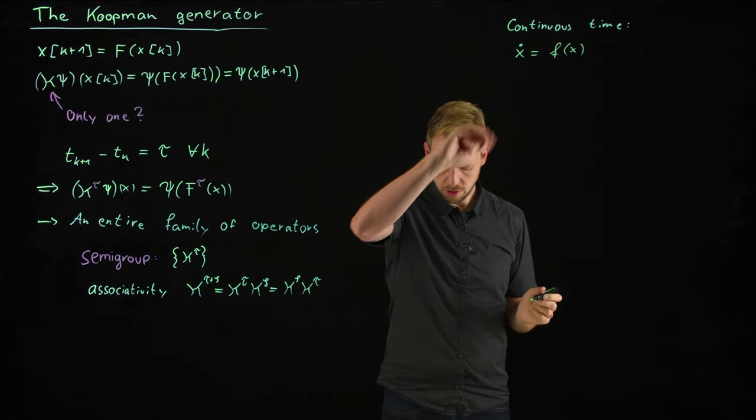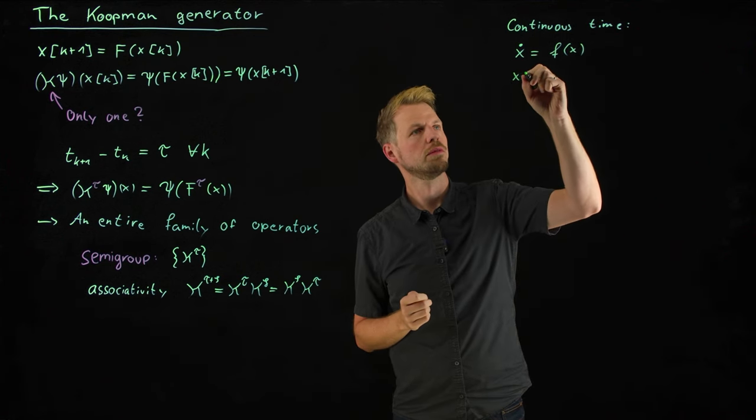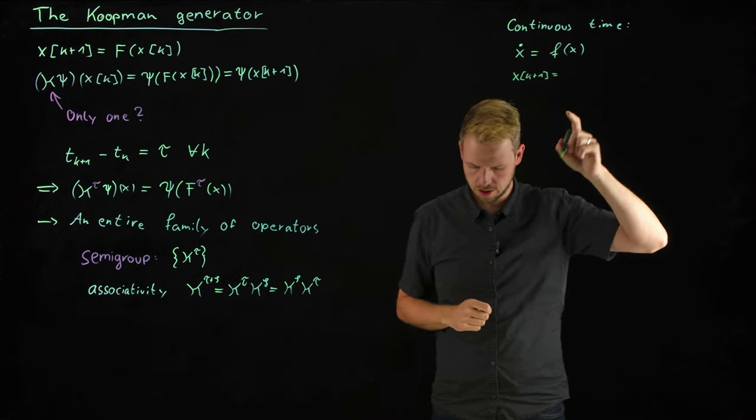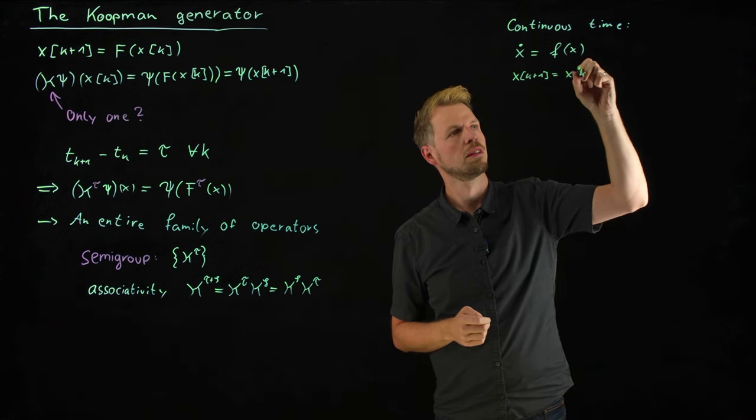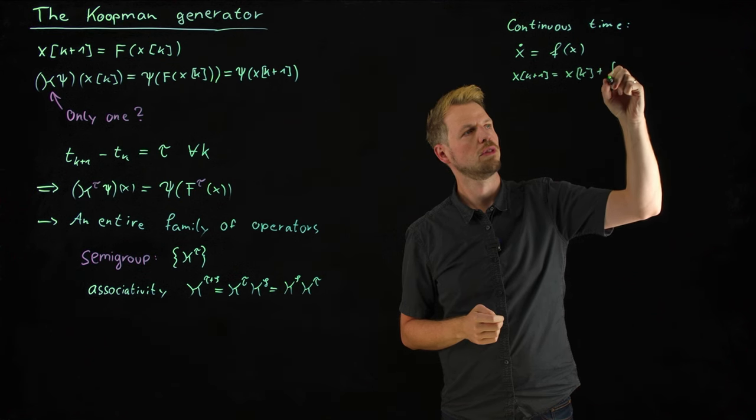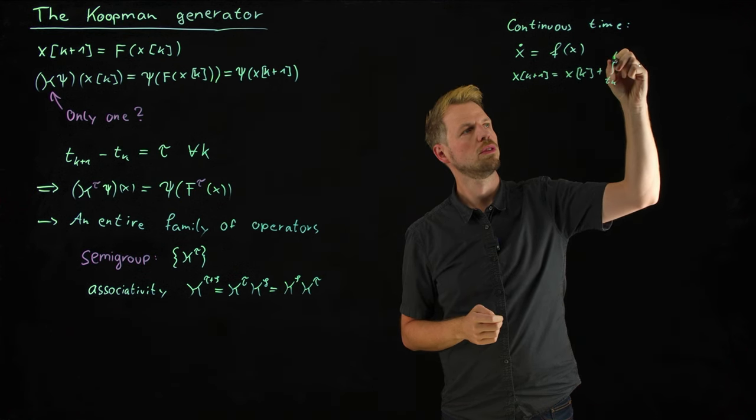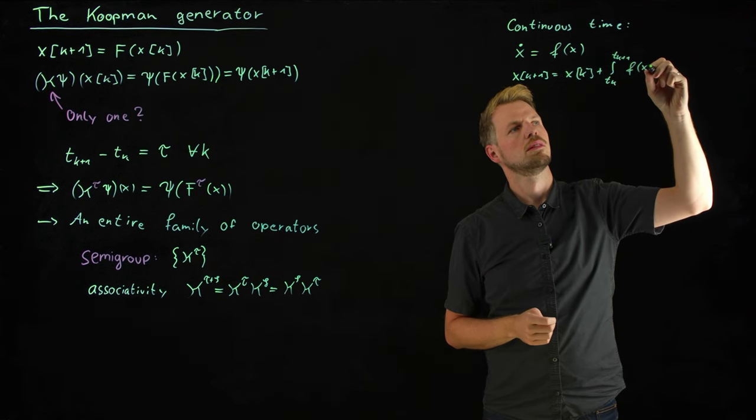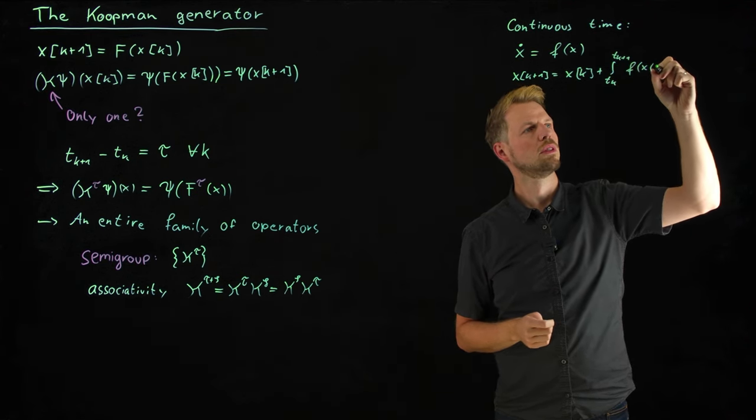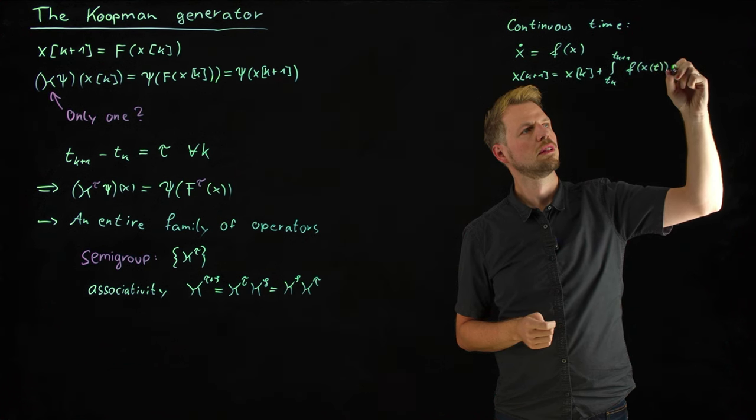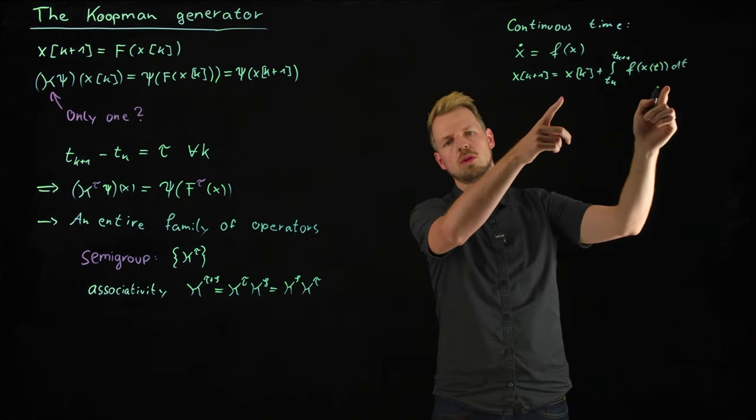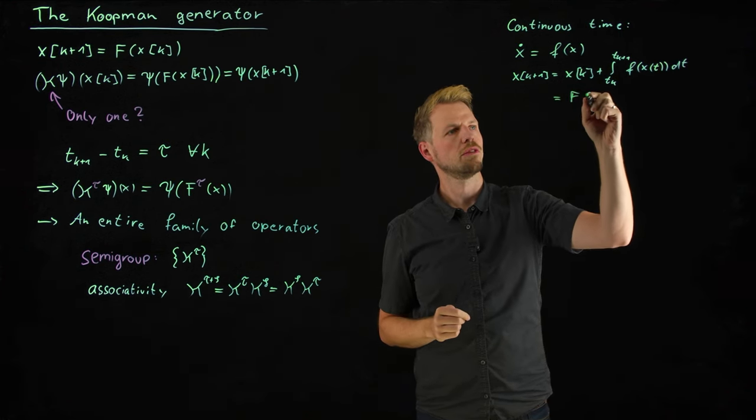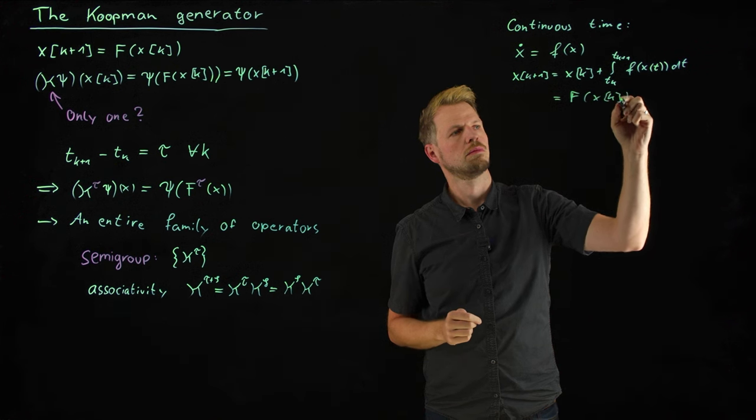Then the discrete time setting is recovered by integrating this right-hand side. So x_{k+1} equals x_k plus the integral from t_k to t_{k+1} of f of x of t dt. And so you see, this is what we would then call the flow f of x_k.